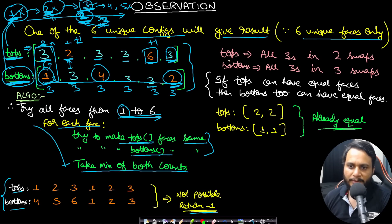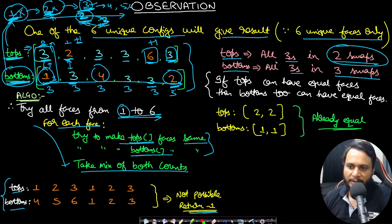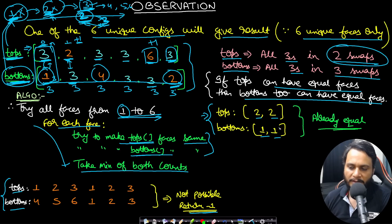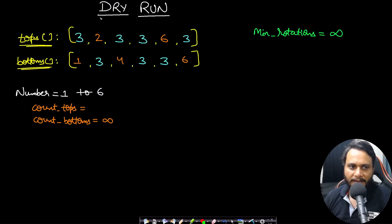In this example, making all tops equal to three takes two swaps, and making all bottoms equal to three takes three swaps — minimum is two. If tops can have all equal faces, then bottoms can too with the same target value. In another example where tops already has [2,2] and bottoms has [1,1], both are already equal so the answer is zero. Now let's see the dry run.